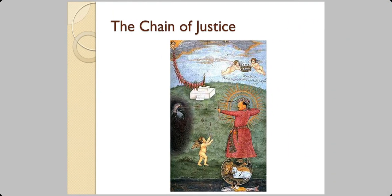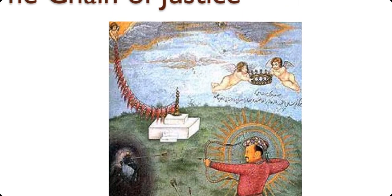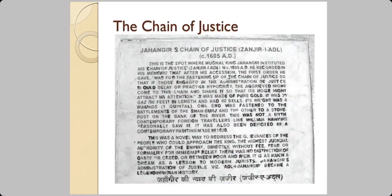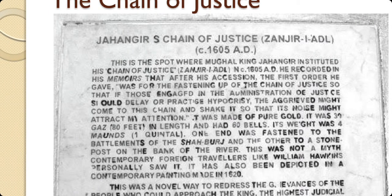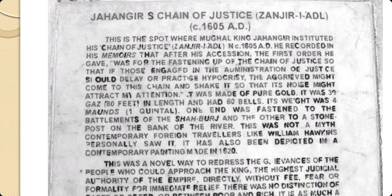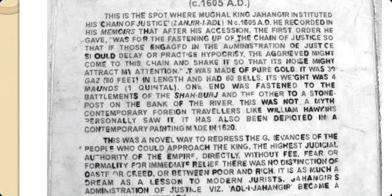This painting shows the chain of justice — the river is Yamuna and there is a post on which the chain is fastened. This is what the government of India has recorded about this chain of justice, or Zanzir-e-Adl. The chain is gone, of course, because it was gold, but the spot where he put it has been marked by the government.